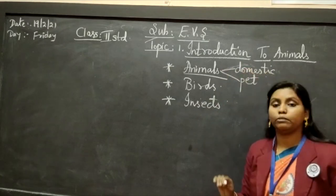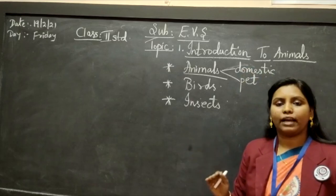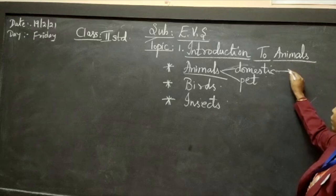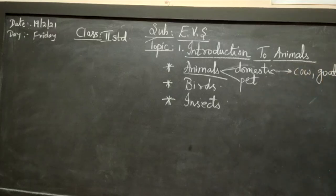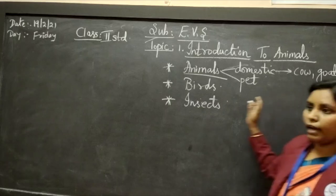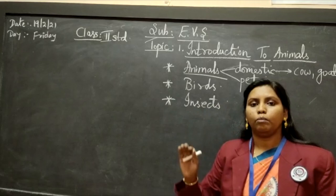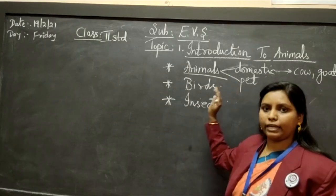What do you mean by domestic animals? Domestic animals are those which you rear at home. For example, cow, goat, sheep, hen, and duck. All these are animals which are kept at home for some domestic purposes, which help in your daily life. These are called domestic animals.